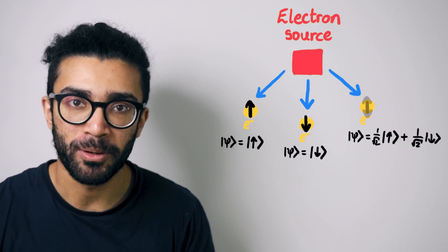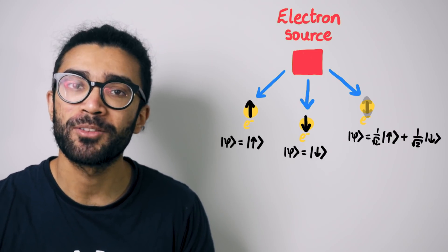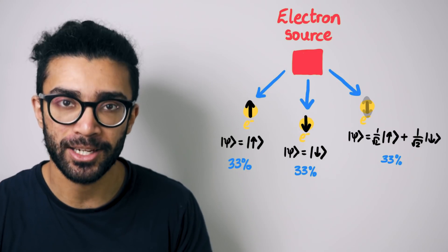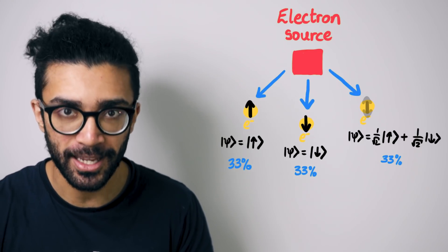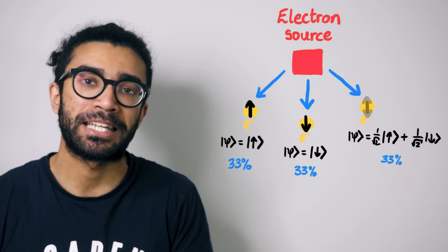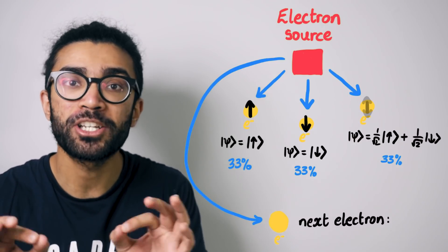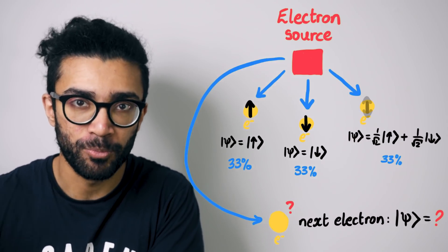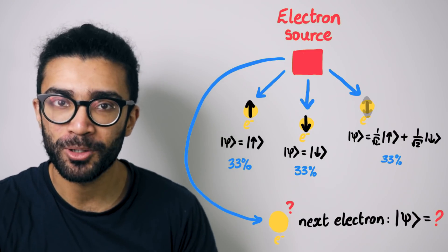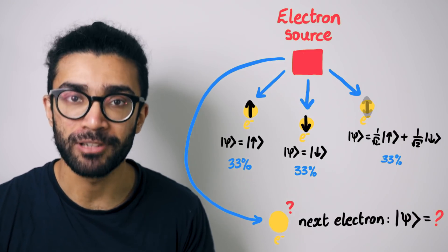We figure this out about the source by making lots of different measurements, and we work out the likelihood with which a particular electron will be in a particular psi state. But unfortunately, because of the nature of the source, we can't know which electron will be in which state beforehand. Well, this is an example of a situation where mixed states are really useful.